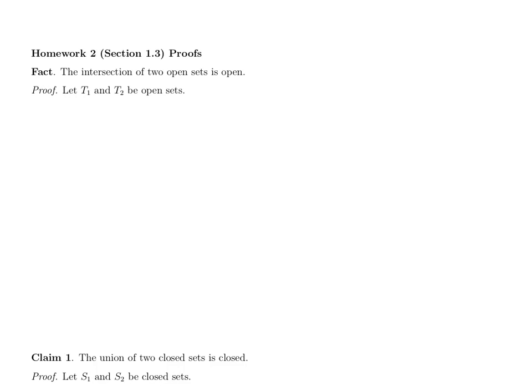So let's start with the fact that we proved in class. This is that the intersection of two open sets is open. This is supposed to be true for any two open sets, and so our proof starts by inviting the person reading our proof to think of any open sets that they would like. Now I'm supposed to show that the intersection of these two sets is also open.